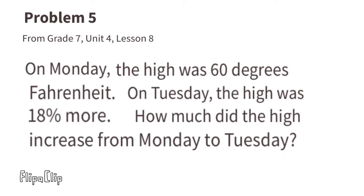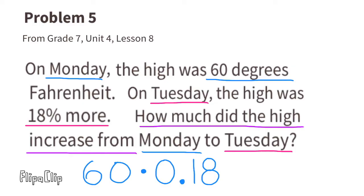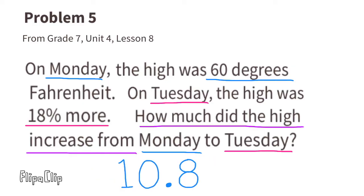Problem 5 (from Unit 4 Lesson 8): On Monday the high was 60°F; on Tuesday the high was 18% more. How much did the temperature increase? We find 18% of 60 by multiplying 60 × 0.18, which equals 10.8. The increase in temperature from Monday to Tuesday was 10.8 degrees Fahrenheit.